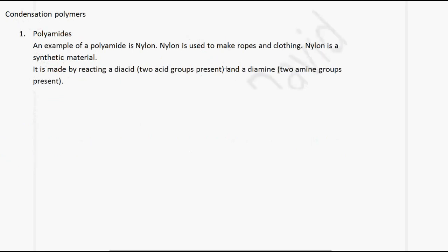The next type is condensation polymerization. In this type, small molecules are eliminated — molecules like H₂O and HCl. The first example is polyamides. An example of a polyamide is nylon, which is used to make ropes and clothing, and is a synthetic material. Nylon is made by reacting a diacid — which has two acid groups — with a diamine — which has two amine groups.